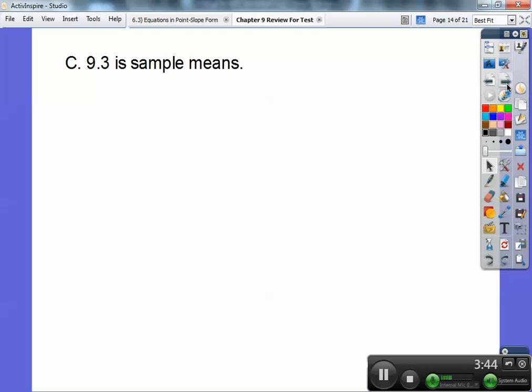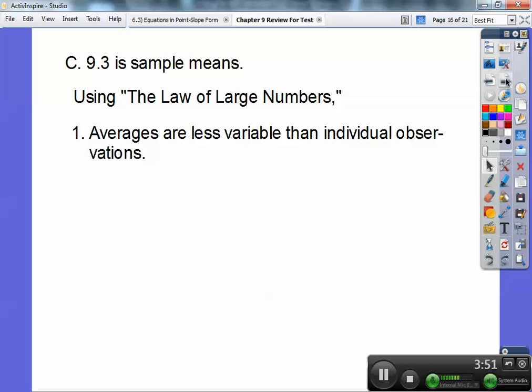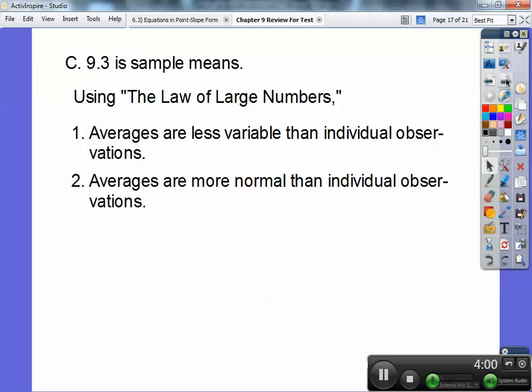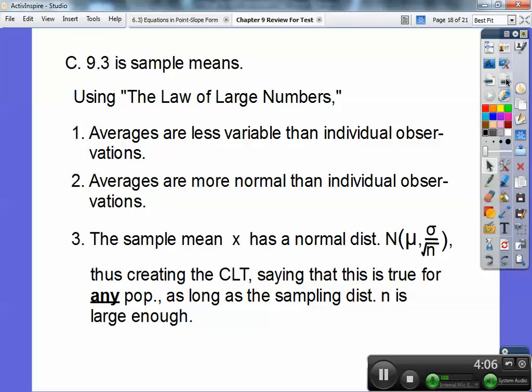9.3 is sampling mean. So using the law of large numbers, averages are less variable than individual observations. We observed that in several of our examples in class. So check your notes out. We did that. Averages are more normal than individual observations. That makes sense. Remember the central limit theorem, which is coming up.